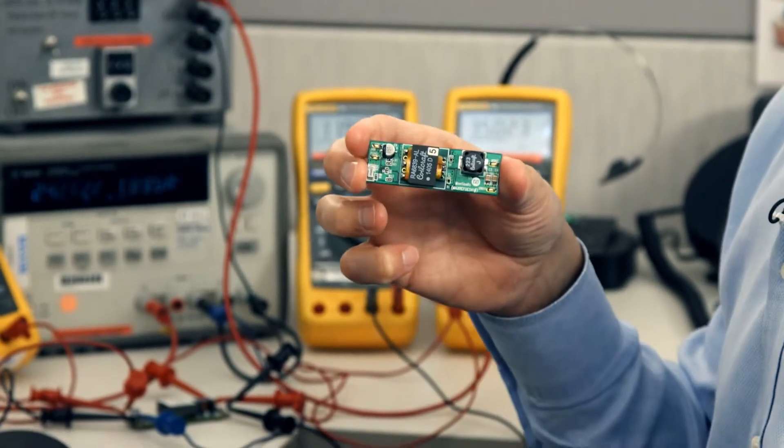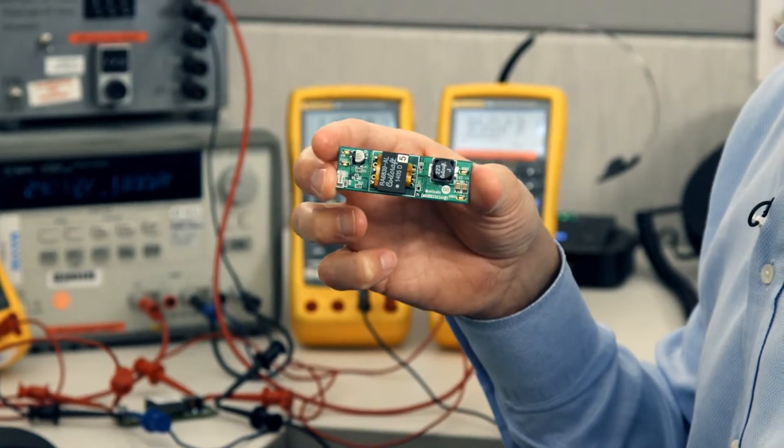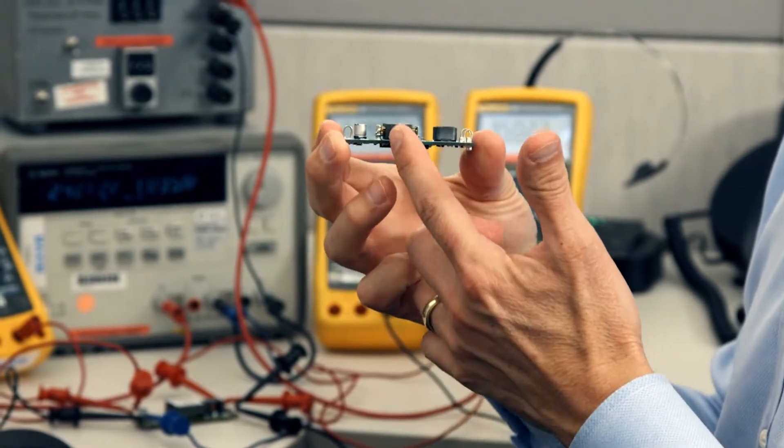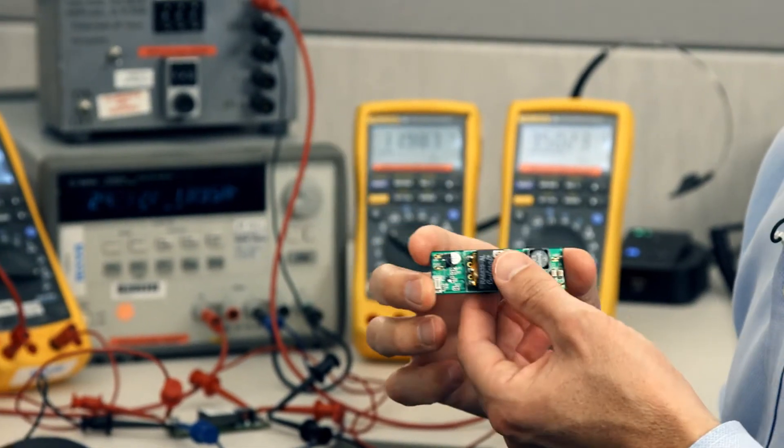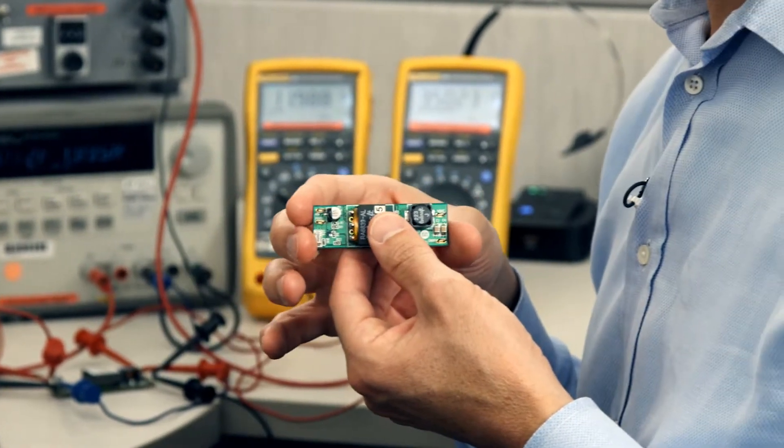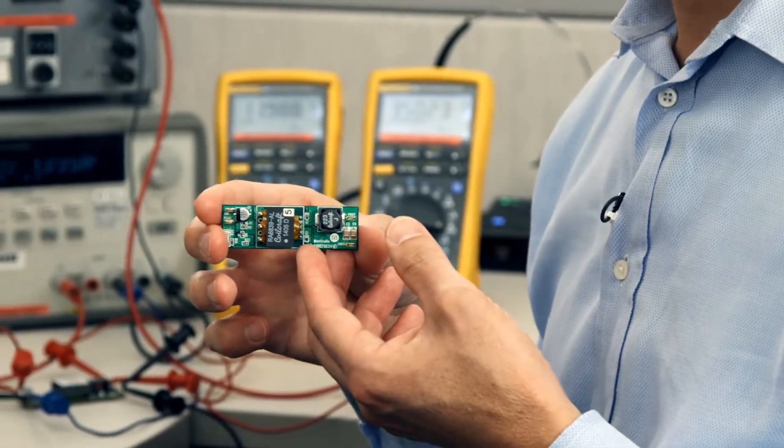MaxRefDes 41 features a planar transformer to save even more space in the Z direction, while MaxRefDes 48 features a conventional transformer to shave a little bit of cost.